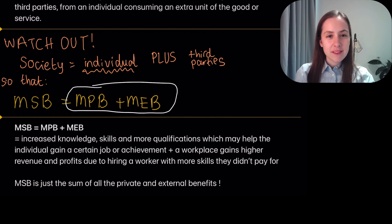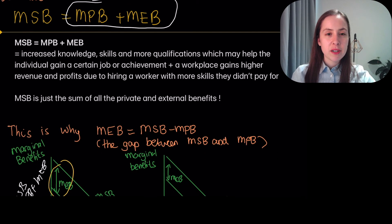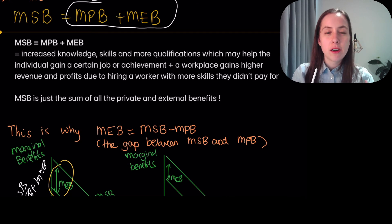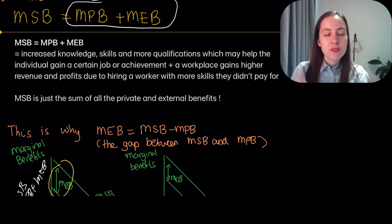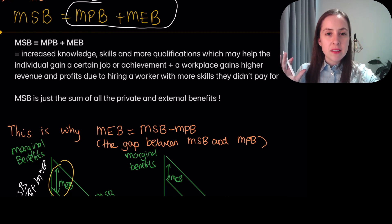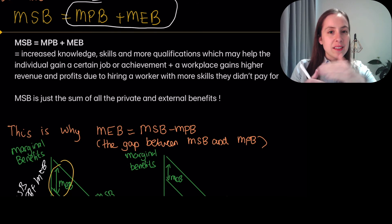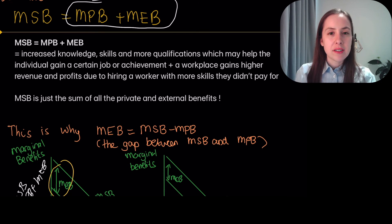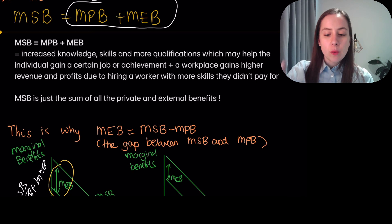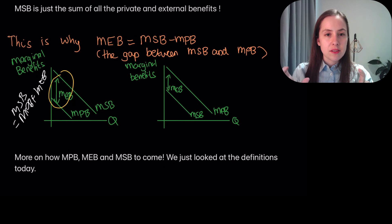To find the social benefit, simply copy and paste the marginal private benefit and the marginal external benefit. The MPB was the knowledge, skills, and better job the individual receives from getting an education. The MEB was the impact on the third party — the workplace receiving a highly trained individual and gaining productivity benefits. Adding those up gives us the MSB, with nothing extra included.